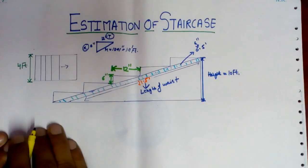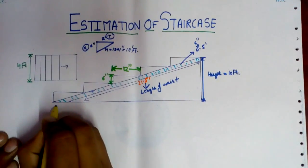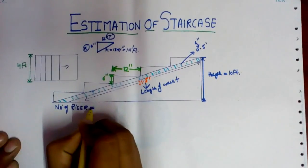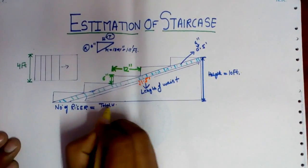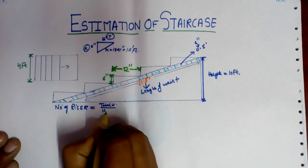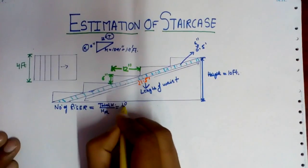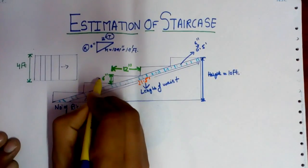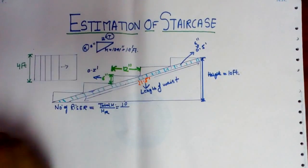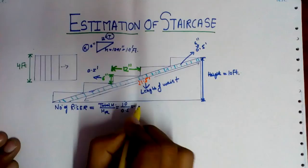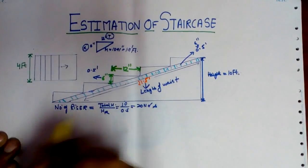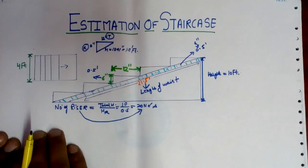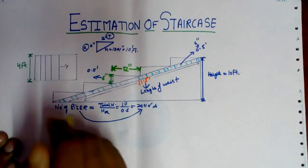Now we have to calculate the number of steps. The number of risers required — the formula is: total height divided by height of rise. That is 10 feet divided by 6 inches (0.5 foot), which comes out to be 20. So 20 risers are required in this particular staircase.